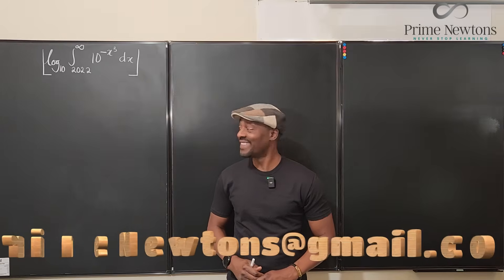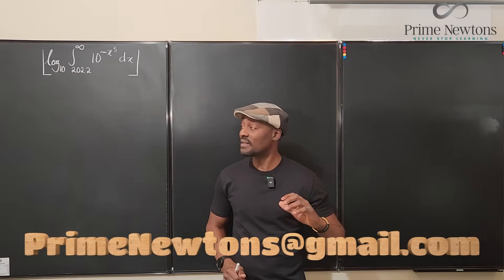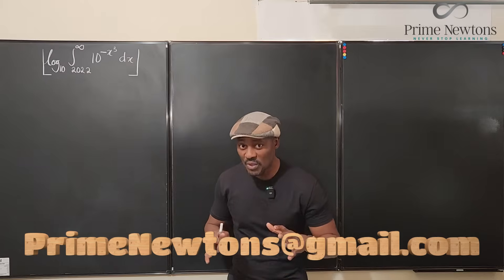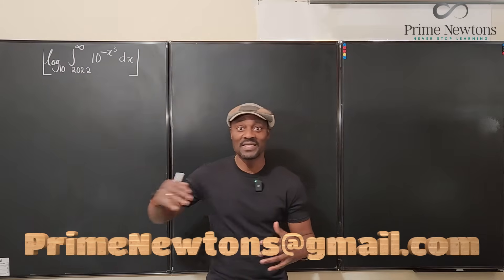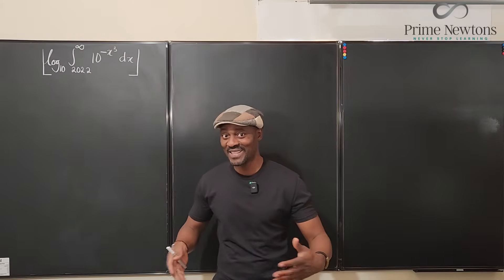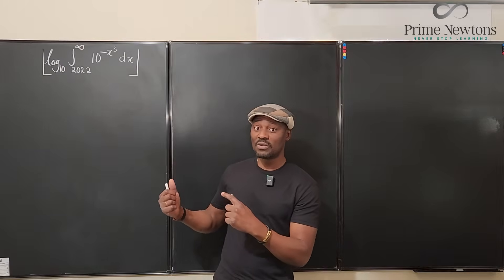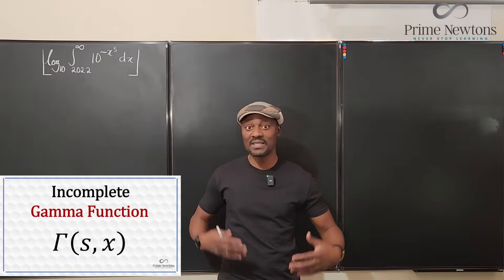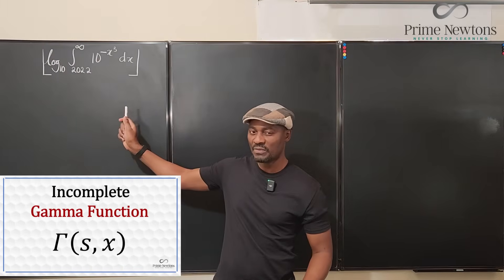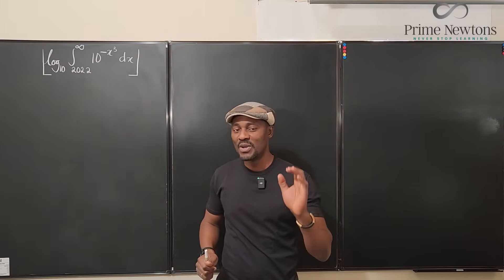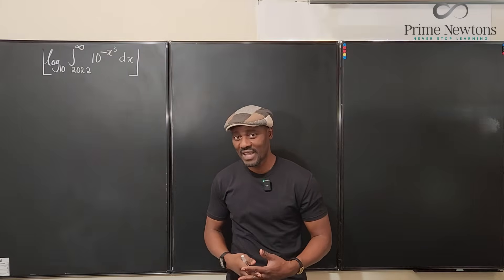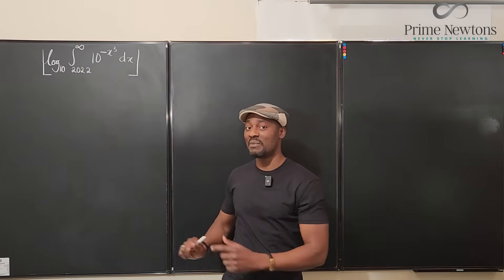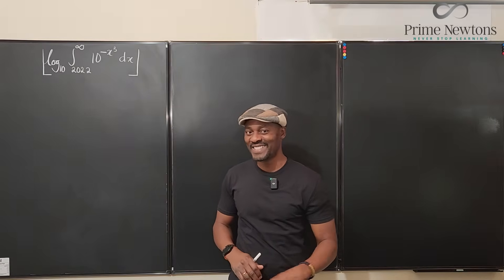Welcome to another video. The mission is to find the floor of the log base 10 of this integral. The floor is not the problem, the log base 10 is not the problem — the integral itself is the problem. This was question number five for the 2022 MIT Integration Bee final and the toughest question, but it turns out to be super easy if you use the incomplete gamma function.